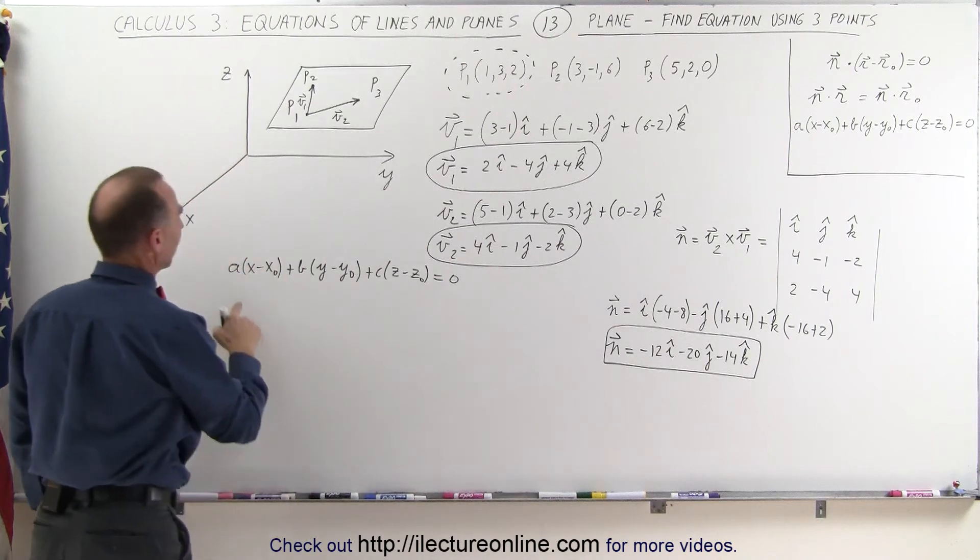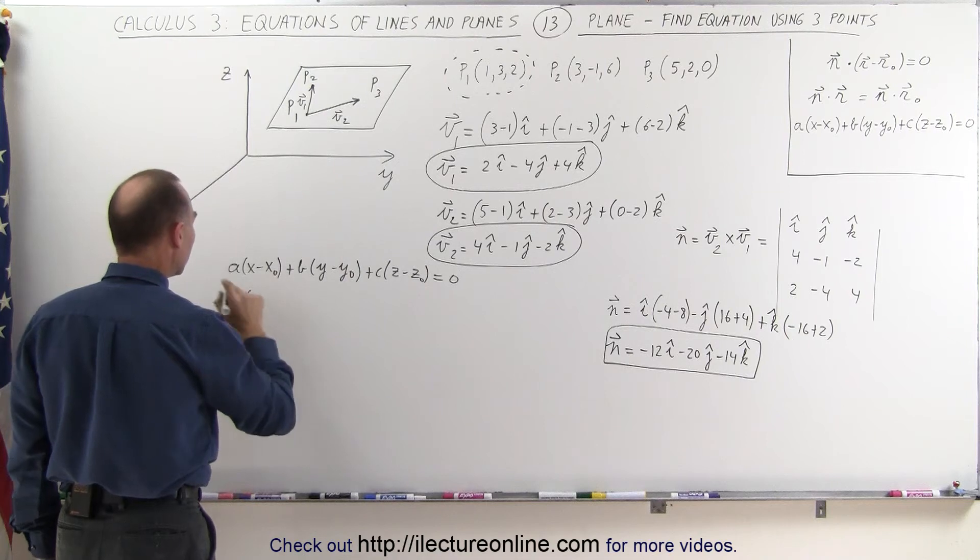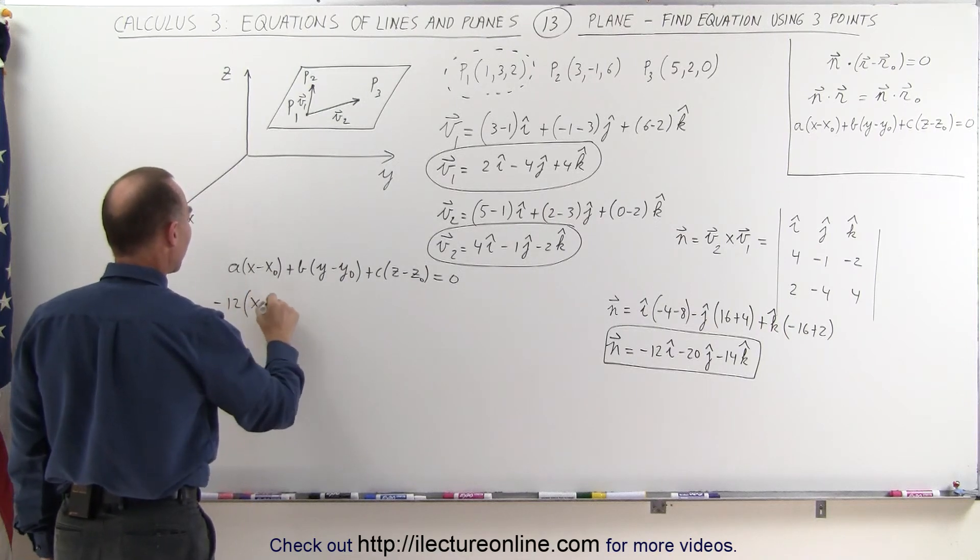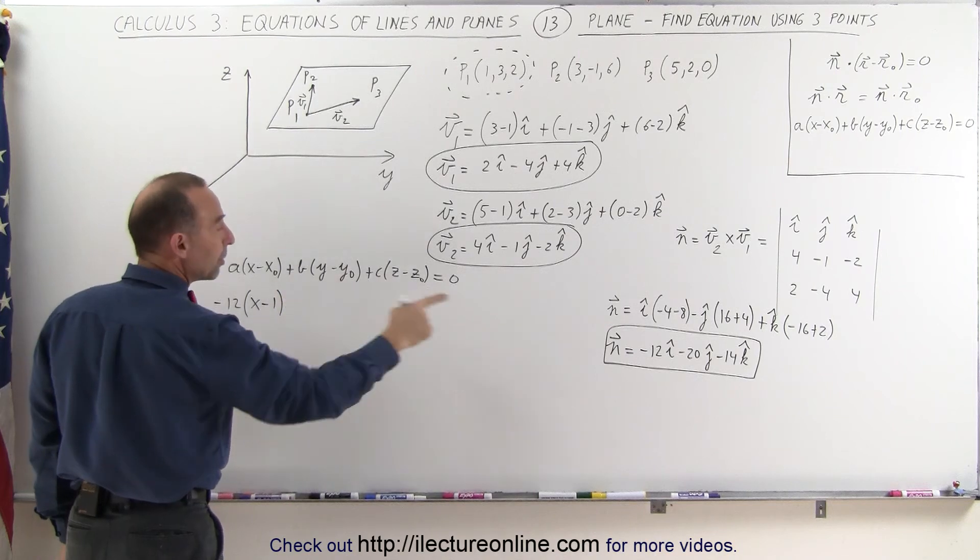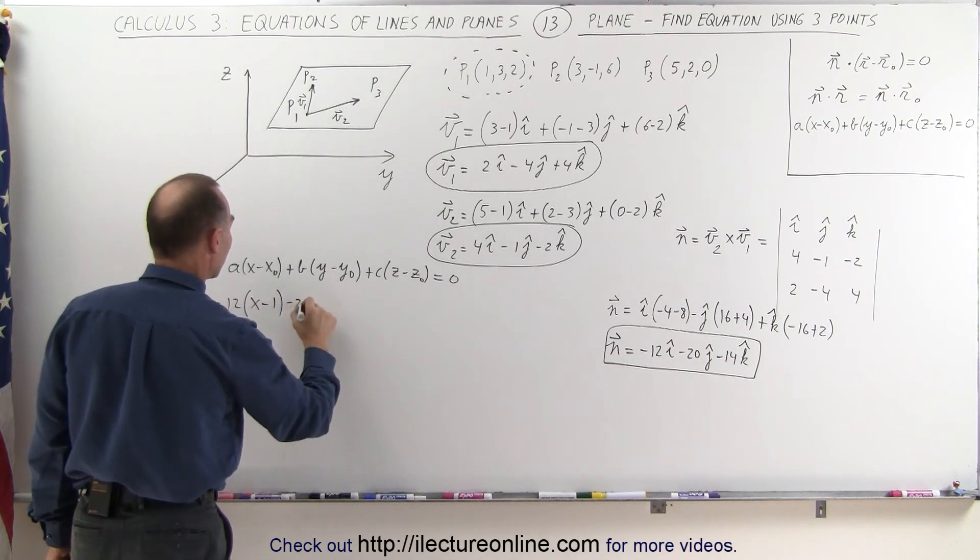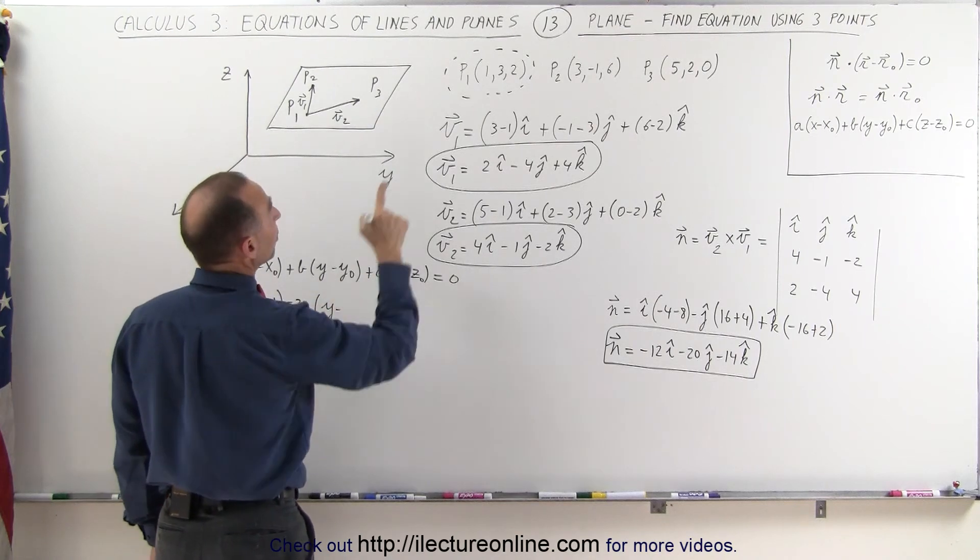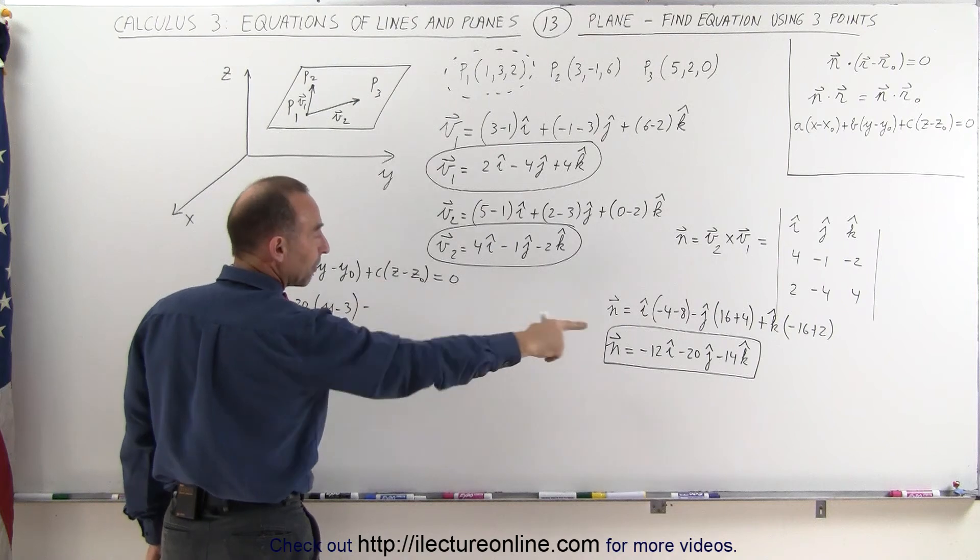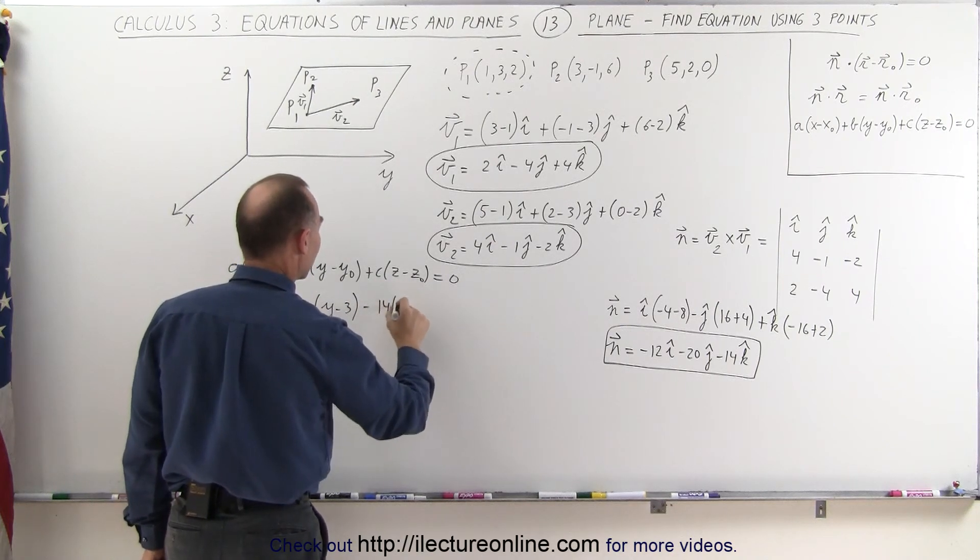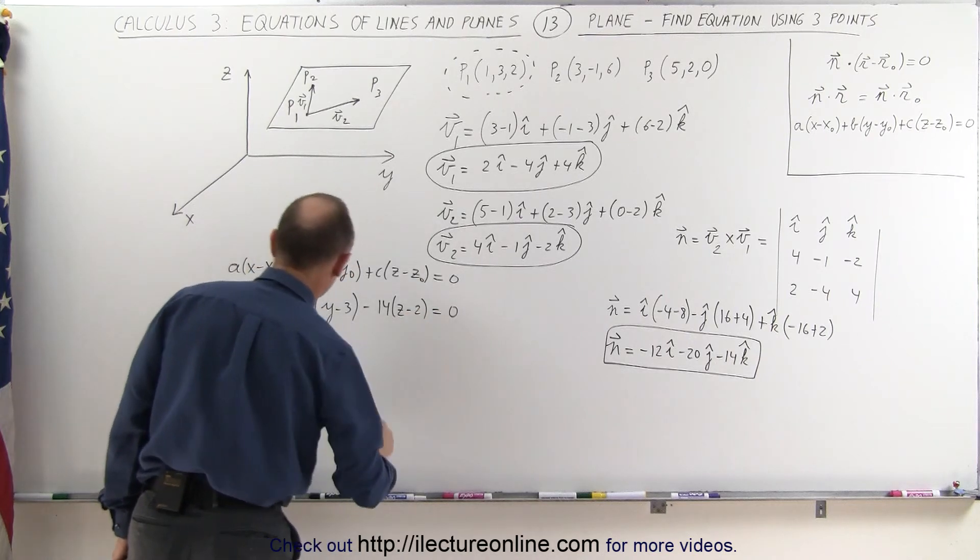Which means that the equation now becomes the a component, which is minus 12, multiply times x minus x₀, which is 1, plus b, but b is a minus 20, so I get minus 20 times (y minus y₀), so y minus y₀ is 3. And minus, because I have a minus 14 there, 14 times (z minus z₀), which is 2. And that adds up to 0.